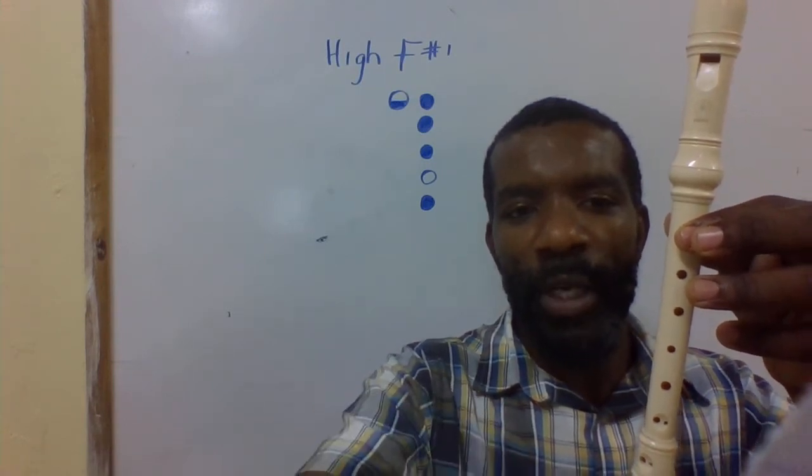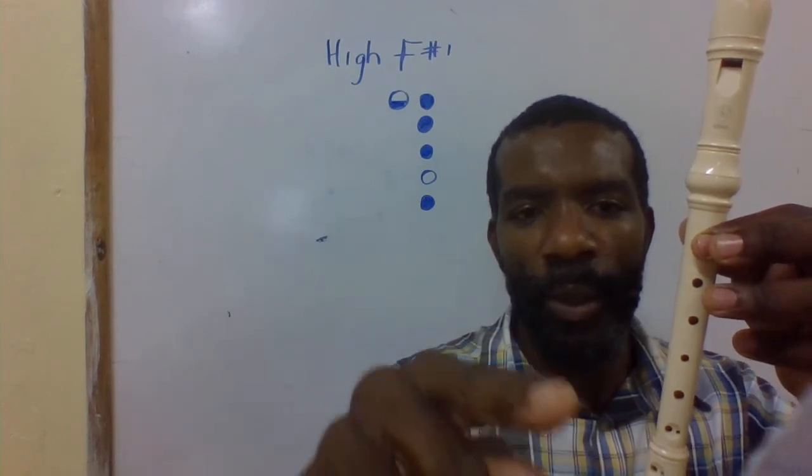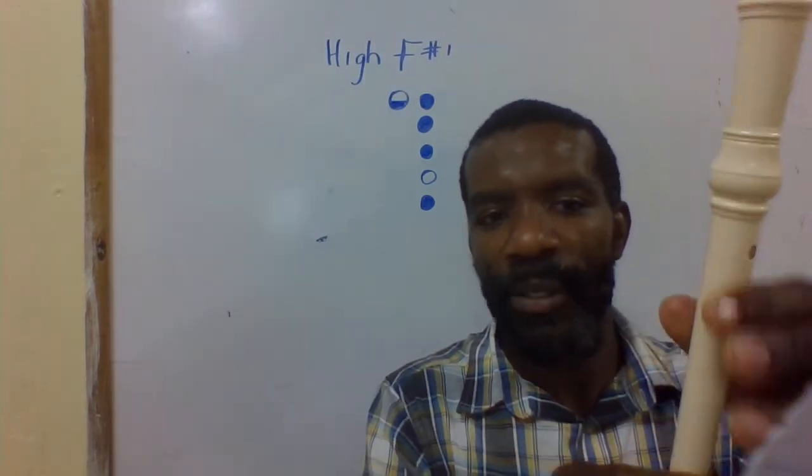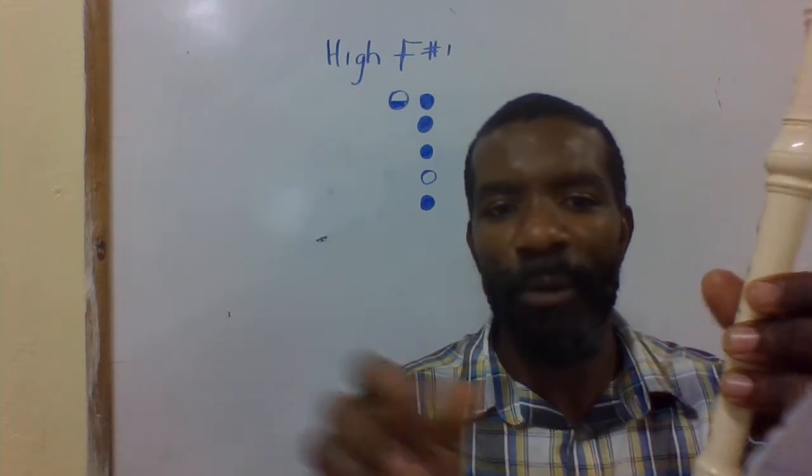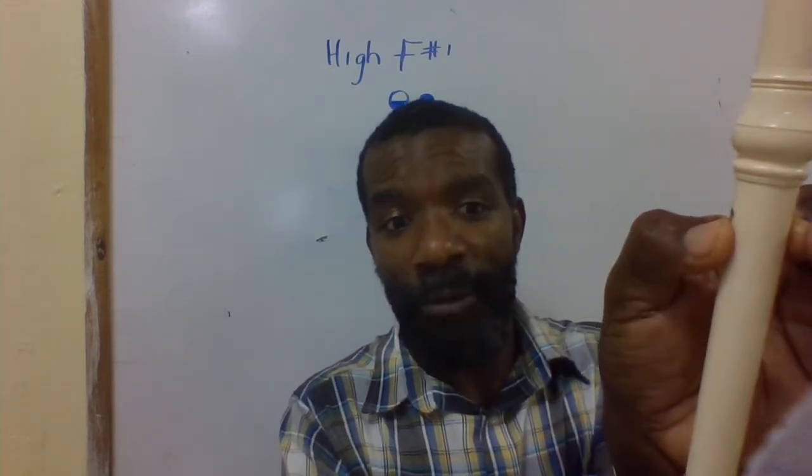You cover those, then skip one and cover the next hole. The hole to the side represents the thumb at the back, and you half cover that. So start by half covering the thumb at the back, cover one, two, three, skip this one, and cover this one.